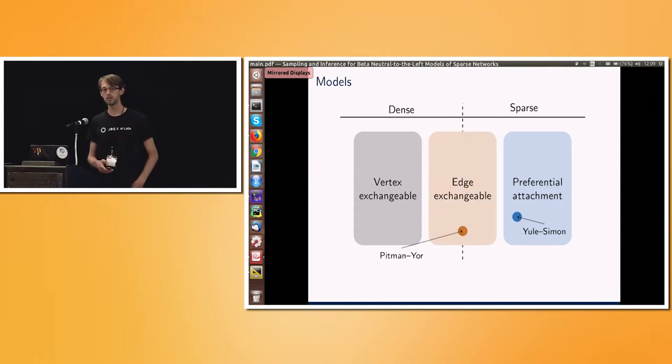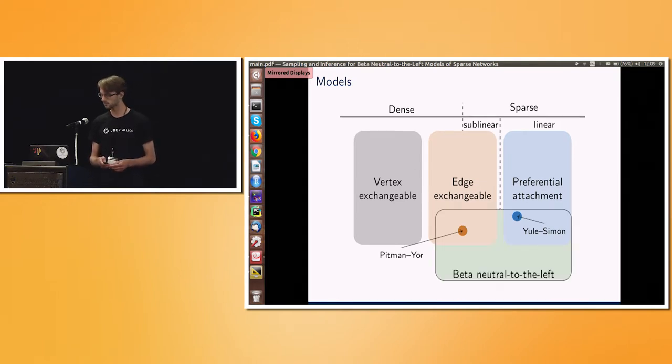And then more recently, people said, well, what if the edge process rather than the vertex process were the exchangeable part? And this turned out to be a very fruitful avenue. And things like the Pitman-Yor process can be applied to modeling networks. But the issue that I want to raise here is that we can't get that linear sparsity from exchangeability. That's inherent in those models that they won't give you linear sparsity.